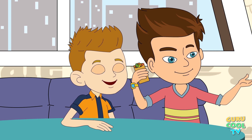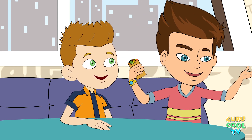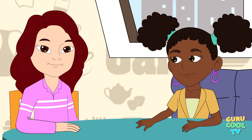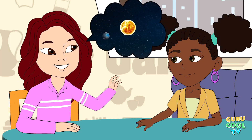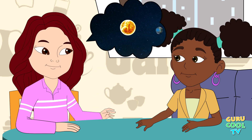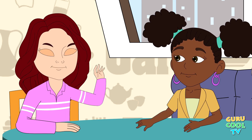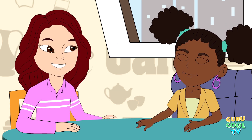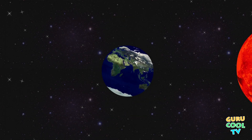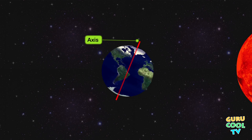Why do we have different seasons in different parts of the year? This is because of Earth's tilt on its axis and its revolution around the Sun. Let me explain it to you.